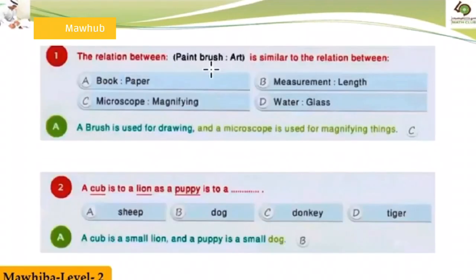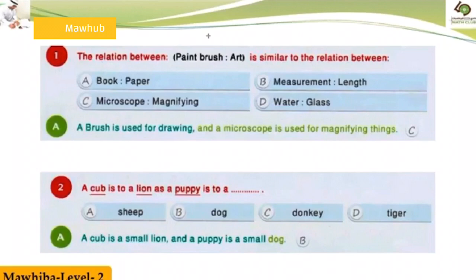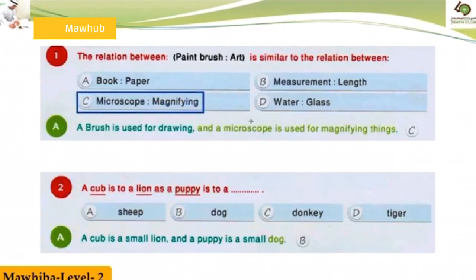Okay, Zaynab — number one. The relation between paintbrush and art is similar to the relation between microscope and magnifying. So the answer is C. Correct! Microscope and magnifying — right, good.